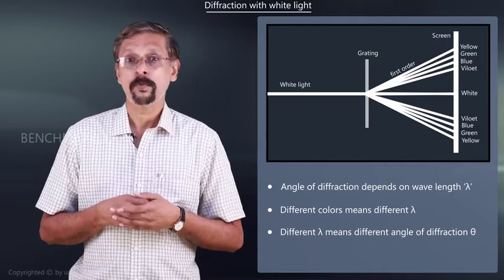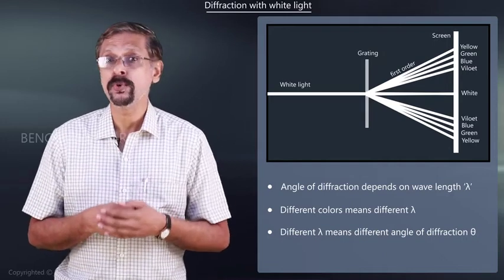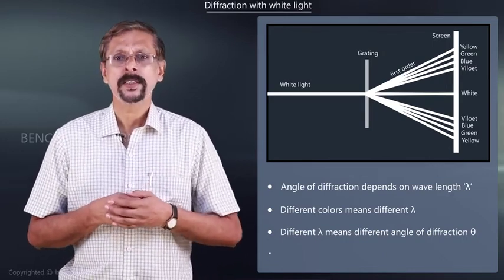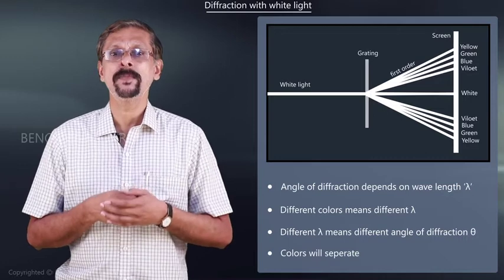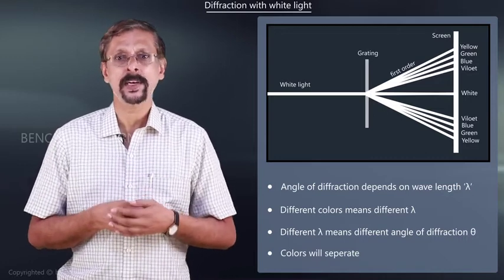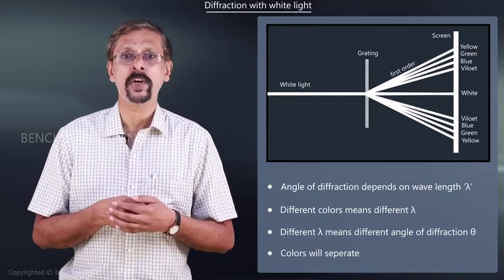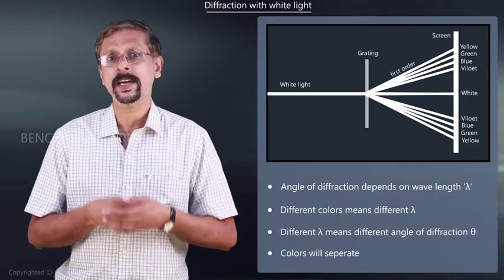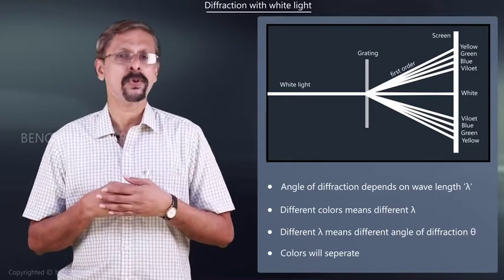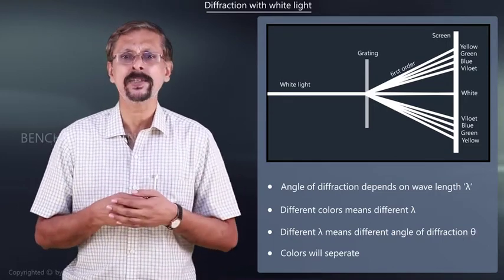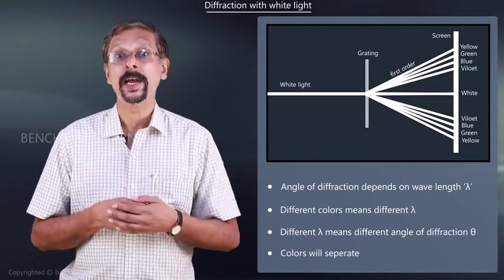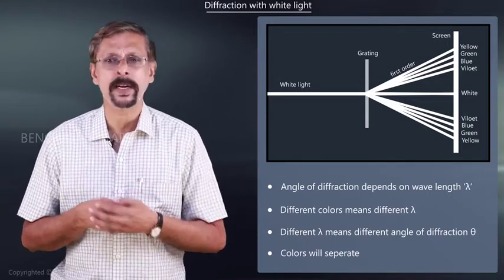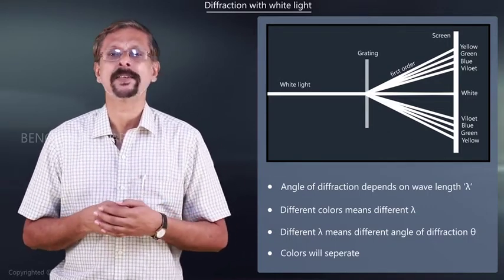And hence, when white light is used as a source, on diffraction the colors will be separated. At one point there will be a focusing of violet light, and at a different angle a different color will get focused. So all the colors will get separated and we get a spectrum of all colors present in the light.